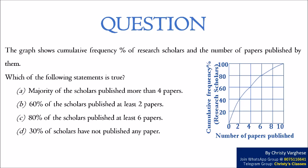Options: A. Majority of the scholars published more than four papers. B. 60% of the scholars published at least two papers. C. 80% of the scholars published at least six papers. D. 30% of scholars have not published any paper.